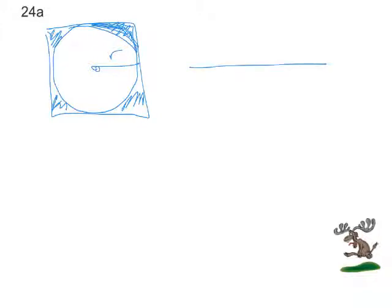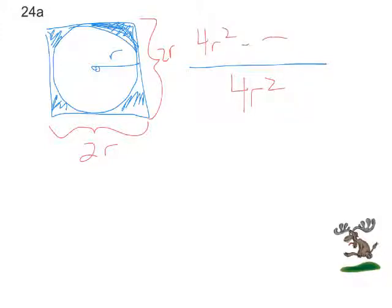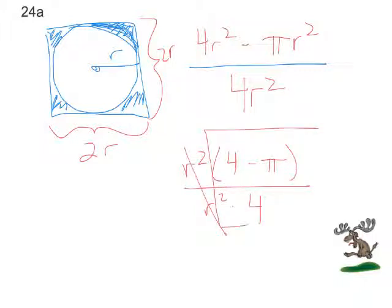So let's do the shaded area. This square has a side length of 2R, and another side length of 2R. So the whole square has an area of 4R squared. And the shaded area is going to be 4R squared minus the area of the circle, which is pi R squared. And we could probably do some factoring here. If we wanted to, we could pull an R squared out of the top, and an R squared out of the bottom. And those cancel, and we get that as an answer.